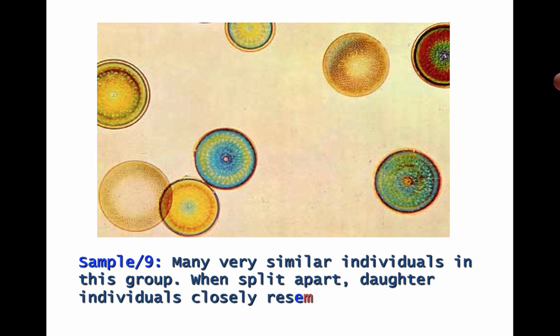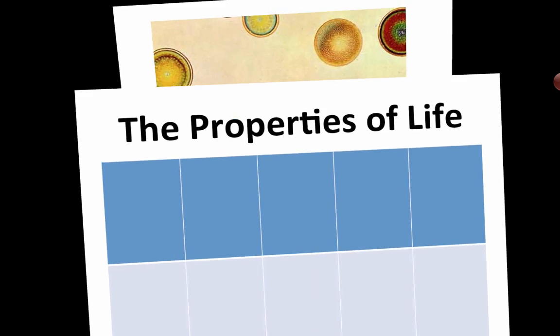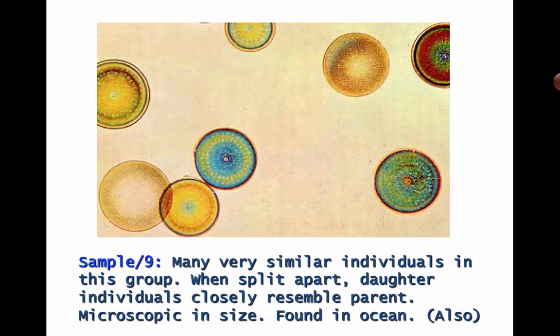Sample 9 — the last sample: many very similar individuals in this group, when split apart daughter individuals closely resemble the parent, microscopic in size, also found in the ocean. Go through your table of properties of life and make sure you can figure out if each of these things was alive or not. I hope you've enjoyed this trip to planet Earth.